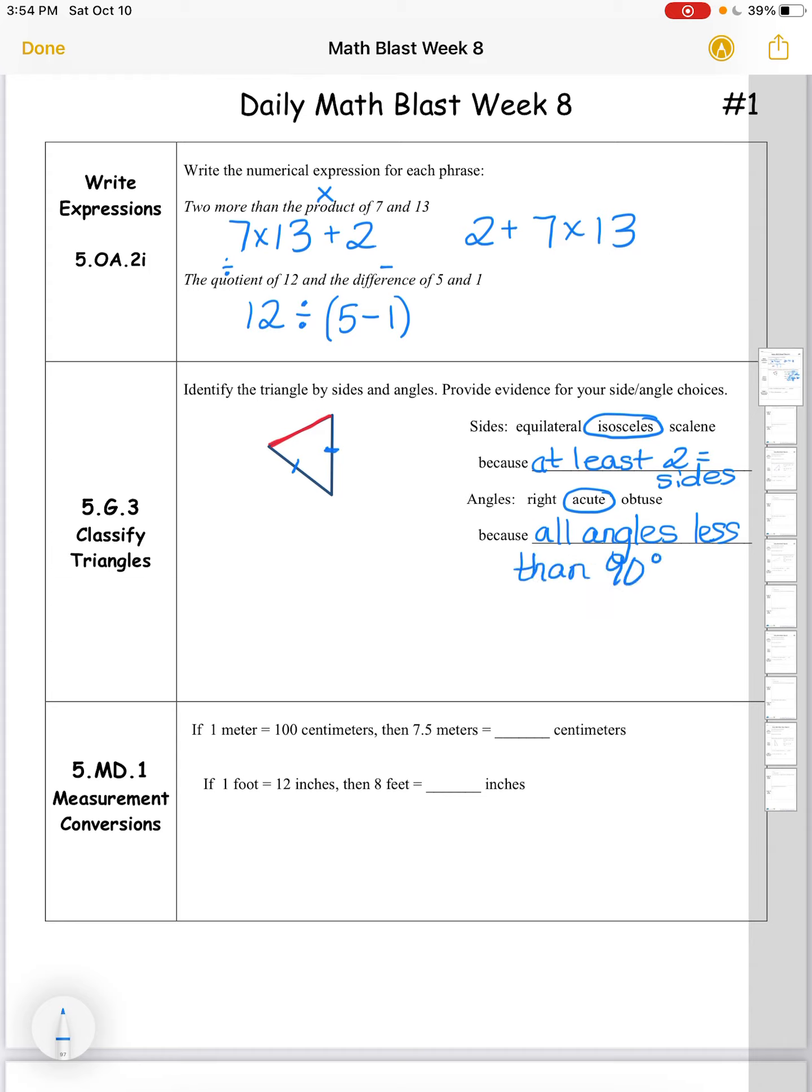Next, we have measurement conversions. If one meter equals 100 centimeters, then 7.5 meters equals 7.5 times 100 centimeters. Now we would take our 7.5 and make two shifts to the left on the place value chart, which would give us 750 centimeters. If one foot equals 12 inches, then eight feet would be eight groups of 12 inches, which is 96 inches.